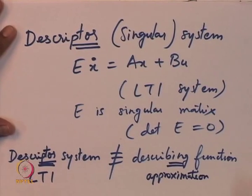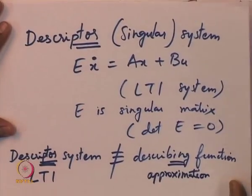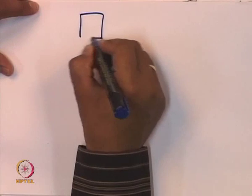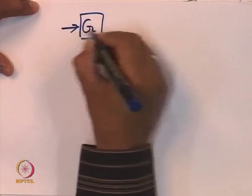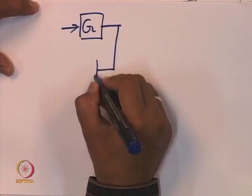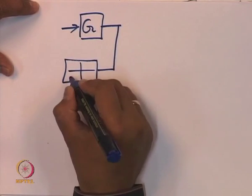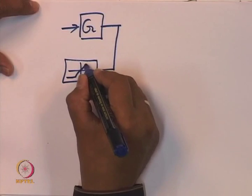Describing function is an approximation method for finding out periodic orbits, their frequency and amplitude. Let us take a specific example. Consider a system G — a transfer function, a linear system — which has in the feedback path the saturation nonlinearity.